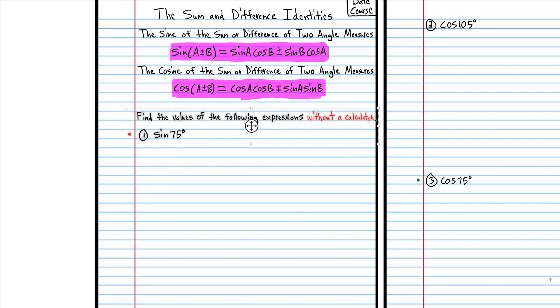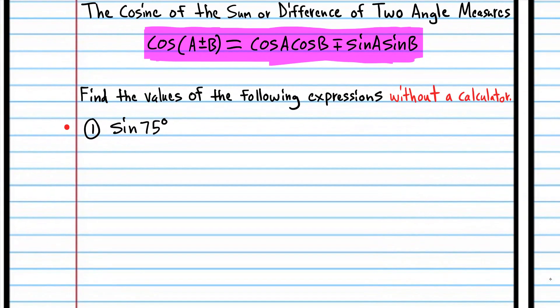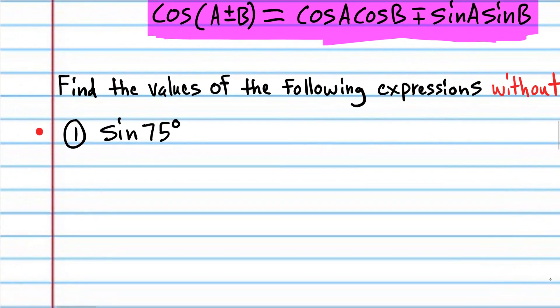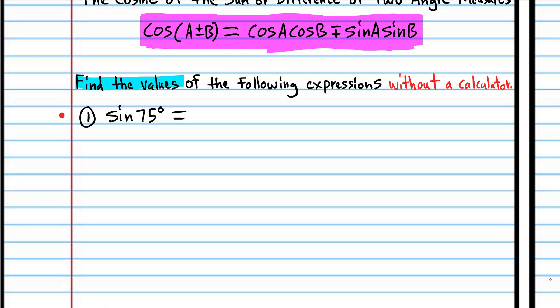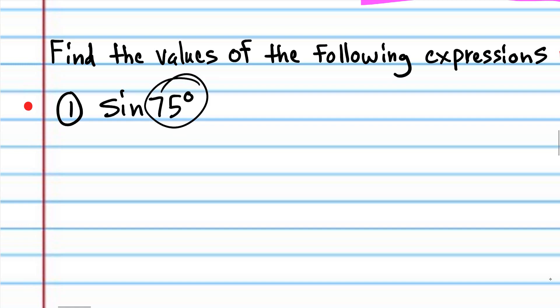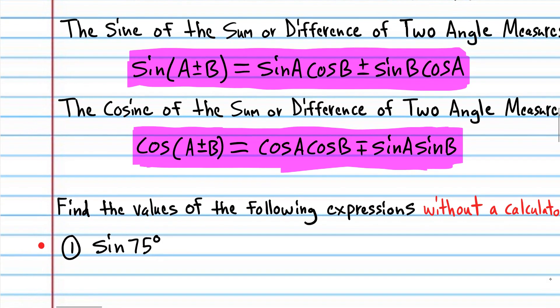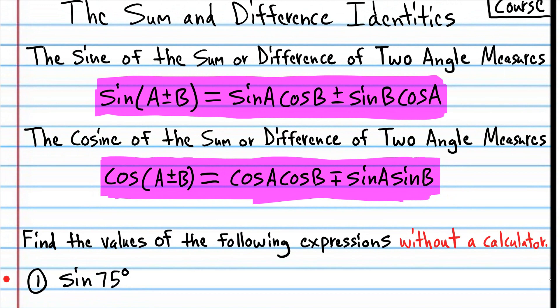It's important that you memorize these formulas and understand how they work. The formulas themselves are not really going to be used directly, but you're going to use them to come up with other formulas that you will use directly in upper mathematics. The problem says to find the values of the following expressions without a calculator. We don't know how to find the sine of a 75-degree angle because this is not a special angle — normally we'd need a calculator. But because we have these identities, we can find the exact value of sine of 75 degrees without one. Take a picture of these formulas with your phone and have them in front of you as we do these problems.